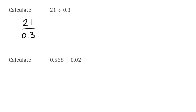Now what I'm going to do is find an equivalent fraction. I don't want to be dividing by that 0.3, so I can actually multiply it by 10. Remembering with equivalent fractions, whatever we do to the bottom we must do to the top. So if I times the bottom by 10 I've got 0.3 times 10 which is 3, and then on the top I've got 21 times 10 which is 210. So 21 over 0.3 is the same as 210 over 3.